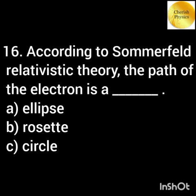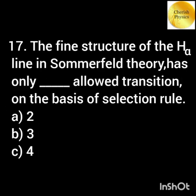According to Sommerfeld's relativistic theory, the path of the electron is an ellipse. The fine structure of the H-alpha line in Sommerfeld theory has only a limited number of allowed transitions on the basis of the selection rule.